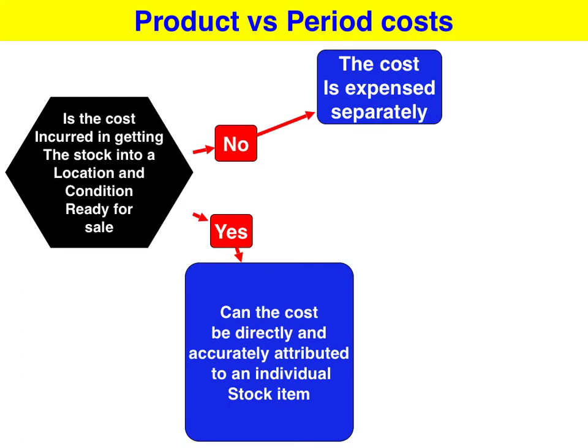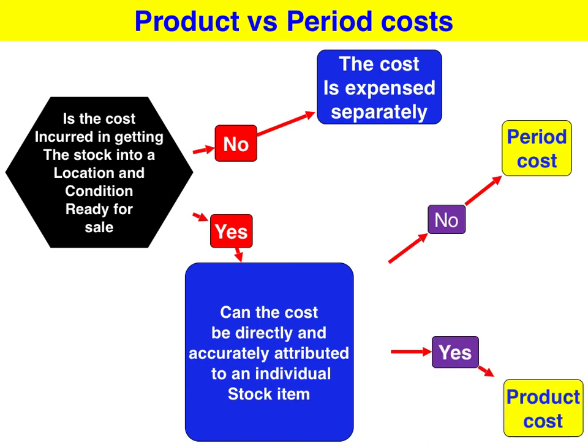If the answer is yes, it's either a product or period cost. The next question is: can the cost incurred be logically allocated to an individual stock item? If the answer to that question is no, then it is a period cost. If the cost can be logically allocated to an individual item, it's a product cost.